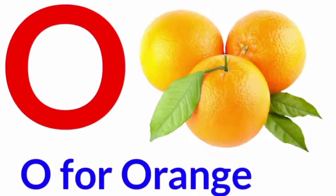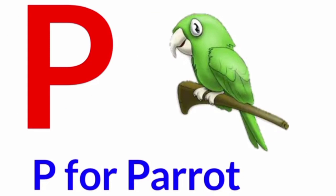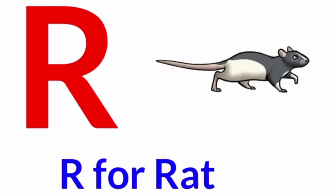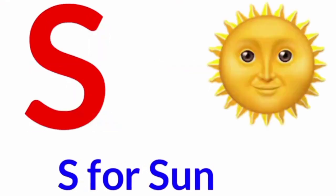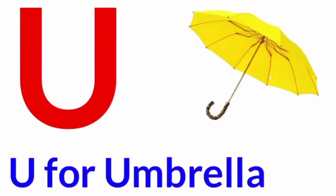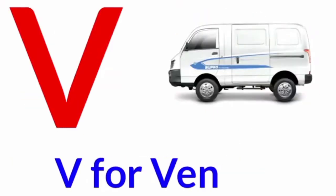O for orange. P for parrot. Q for queen. R for red. S for sun. T for tiger. U for umbrella.